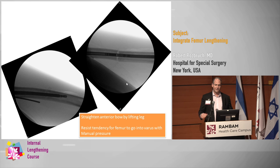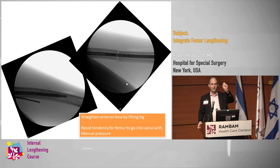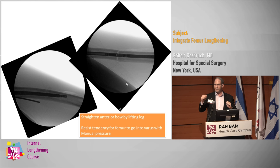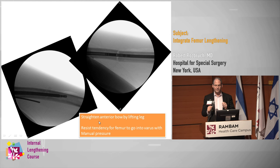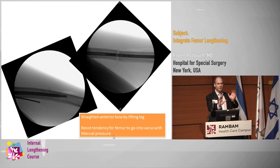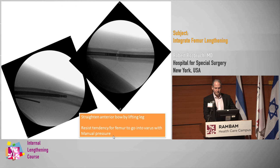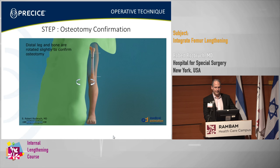Usually, as soon as the osteotomy is complete, the femur flexes. So just having your assistant lift the leg into extension allows the nail to pass pretty easily. It's worth taking a couple of fluoroscopy shots to make sure you can get across and aren't traumatizing the mechanism. If there's a little bit of varus, you can also just do a little manual correction. I tend not to use an external fixator during routine antegrade lengthenings.